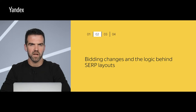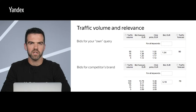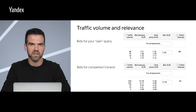Now let's talk about the changes to bidding and the logic behind SERP layouts. In the budget forecast, you will now see the traffic volume, and it will give you a forecast for the number of impressions and clicks. Keep in mind that this is an approximate forecast, as it is not based on your real ads but on other advertisers' statistics in Yandex Direct. An ad's relevance in relation to a search query depends on both the bid and the traffic volume you can receive. For example, if an advertiser chooses keywords related to selling Ford Focuses but their ads offer a completely different car — let's say a Kia Rio — the ad text will not be fully relevant. You can do this and get an additional audience, but you can expect a lower CTR and higher bids because you are competing with more relevant ads.